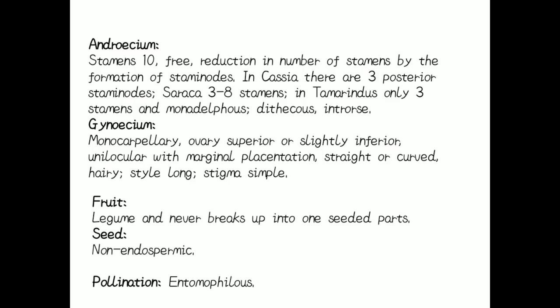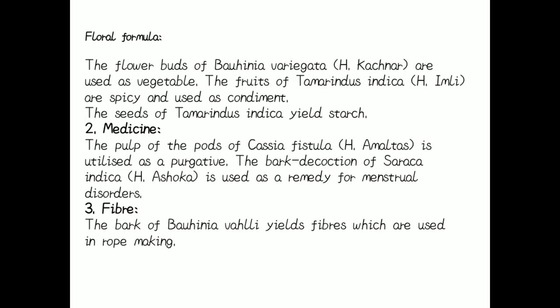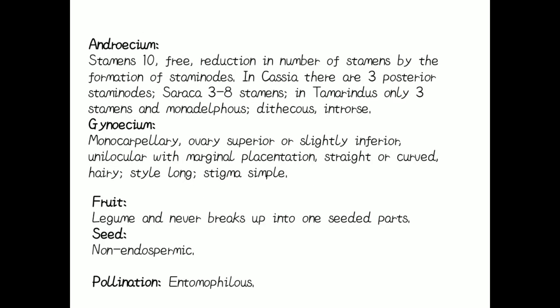Androecium: Stamens are 10, free. Reduction in the number of stamens occurs by the formation of staminoids. In Cassia there are three posterior staminoids; in Saraca there are three to eight stamens; in Tamarindus only three stamens. Monadelphous, diadelphous, and introrse.